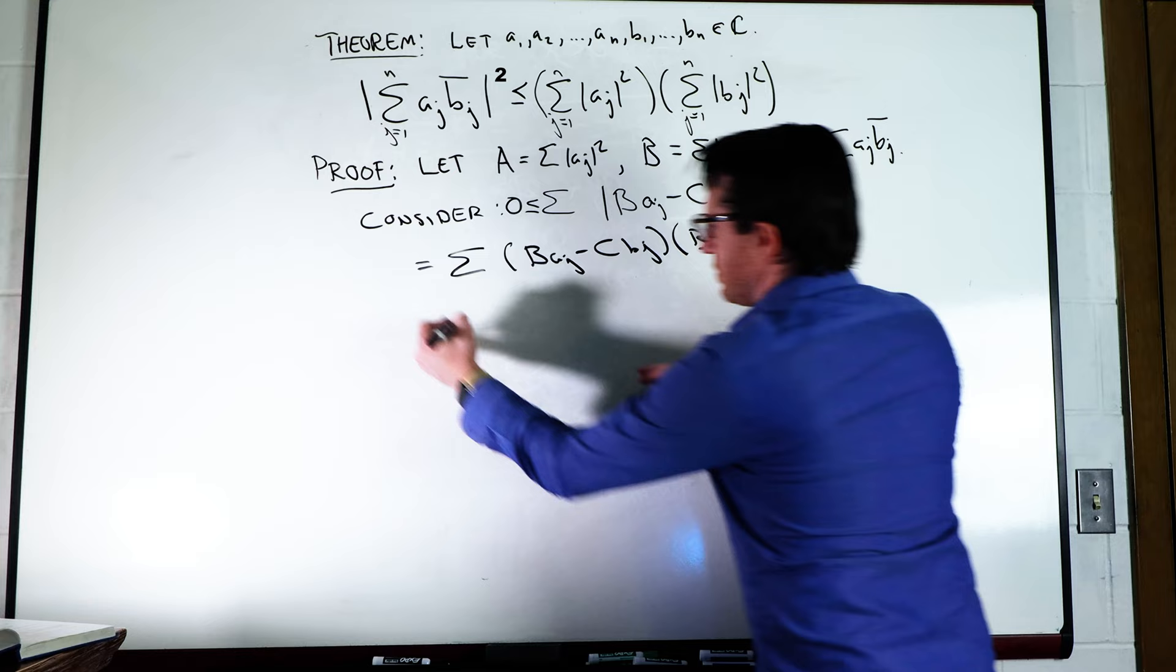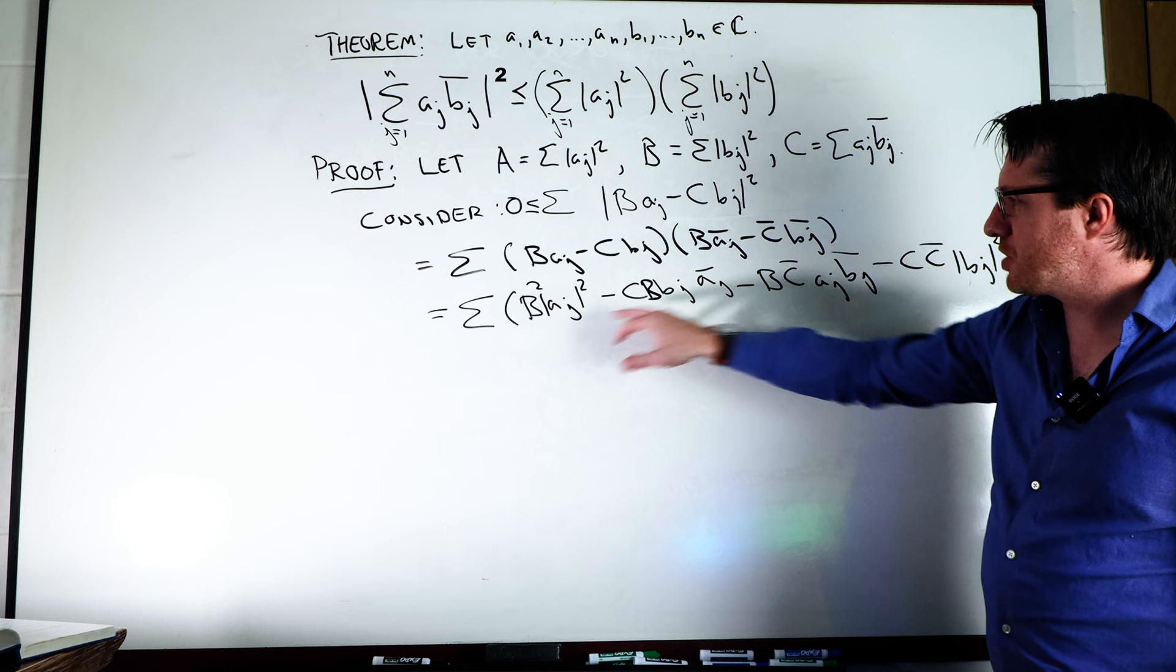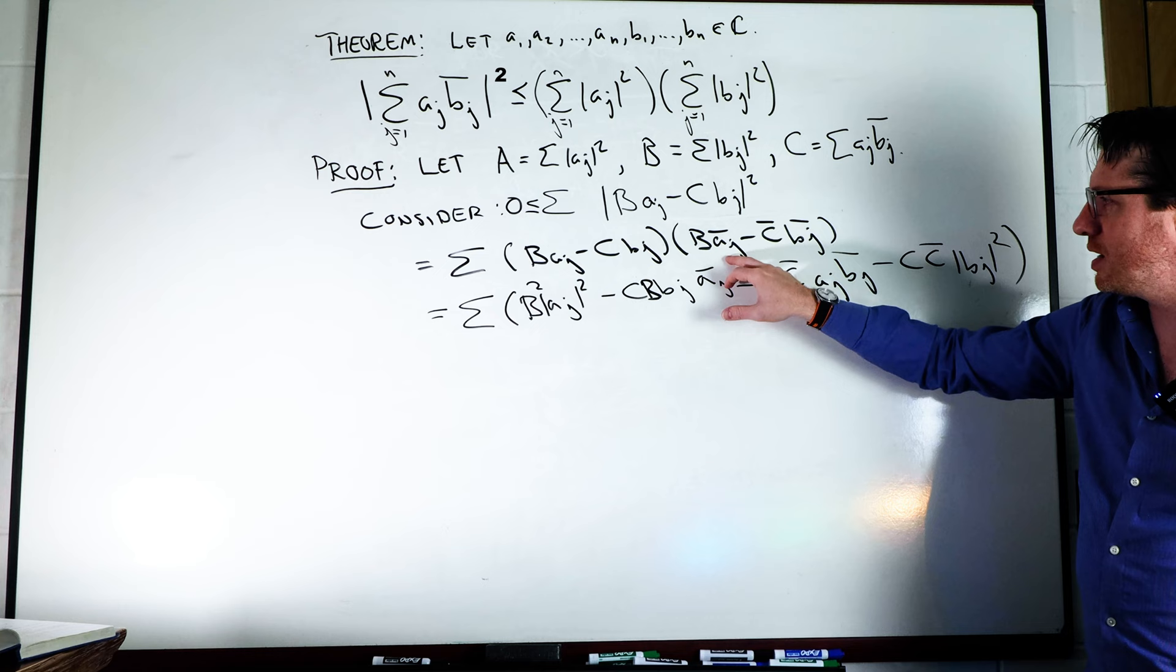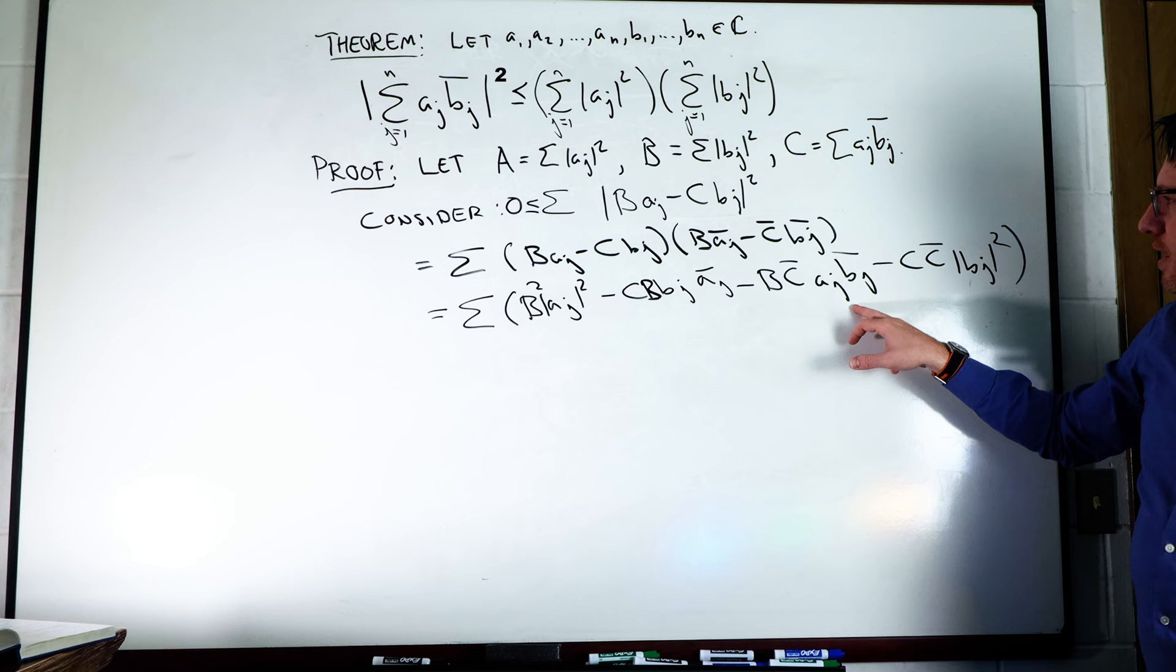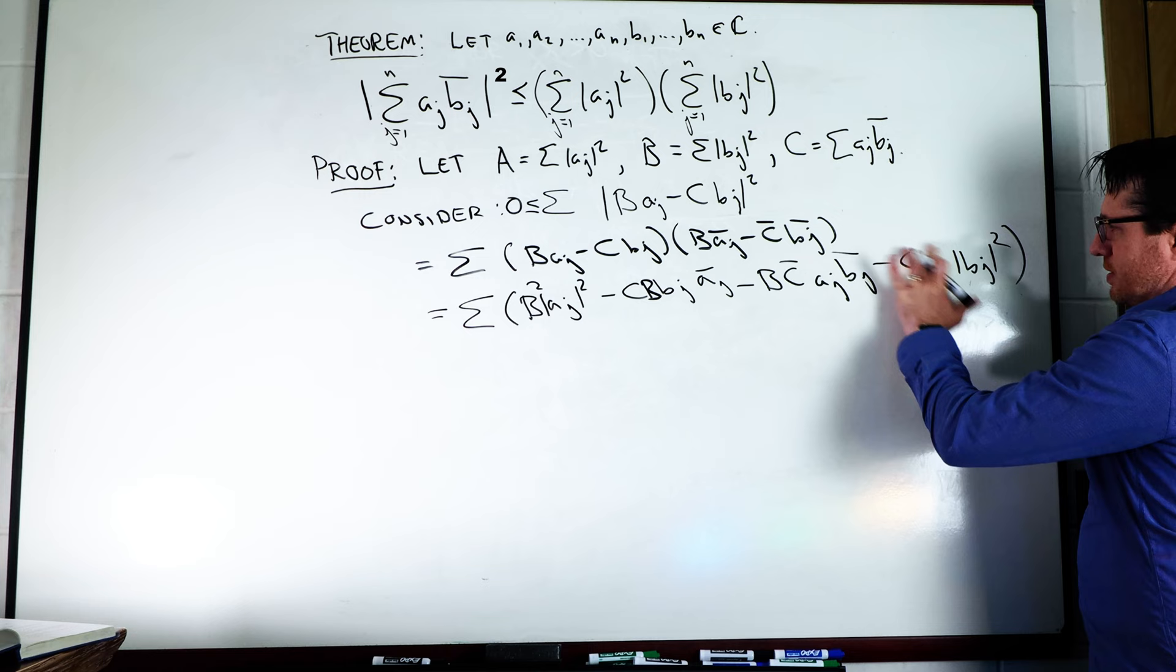So I foiled everything out, and we see that we have these B squared terms coming out here. a_j times a_j bar gives us norm of a_j squared. And then I get C times b_j times B times a_j bar. This guy times this guy gives me that, and this guy times this guy gives me that. Now we know that C times C bar is the same as just magnitude of C squared.